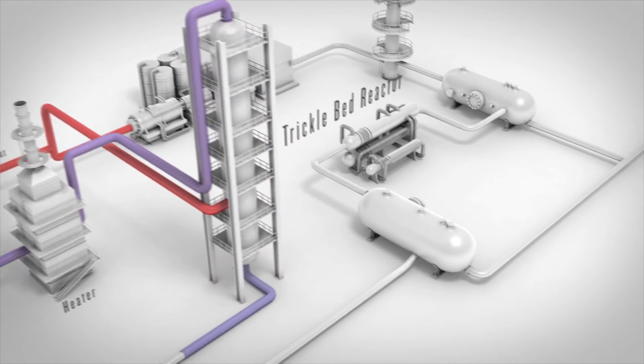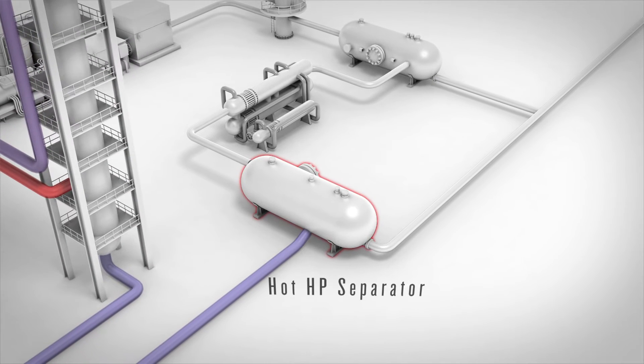The two-phase reactor effluent flows to a hot high-pressure separator. Liquid reactor effluent exits the bottom of the hot high-pressure separator.